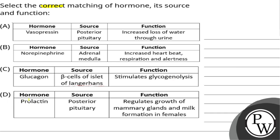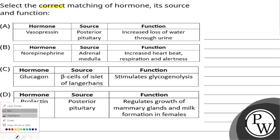Option D, hormone prolactin, source posterior pituitary. Function: regulates growth of mammary gland and milk formation in females.